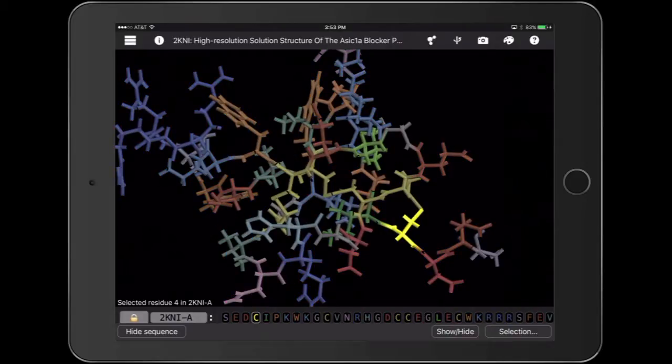Now, I'm going to touch each letter C to find two cysteines that are joined together.